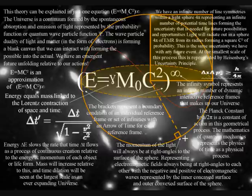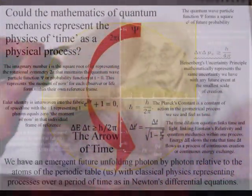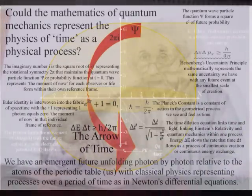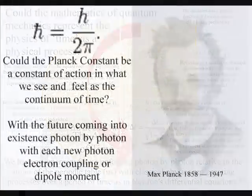This only makes sense if we think of the universe as a continuum formed by the quantum wave spontaneous absorption and emission of light continuously interacting with the atoms of the periodic table. The wave-particle duality continuously forms a blank canvas that the atoms can interact with forming the possible into the actual. We have an emergent uncertain future relative to the energy and momentum of our own actions.